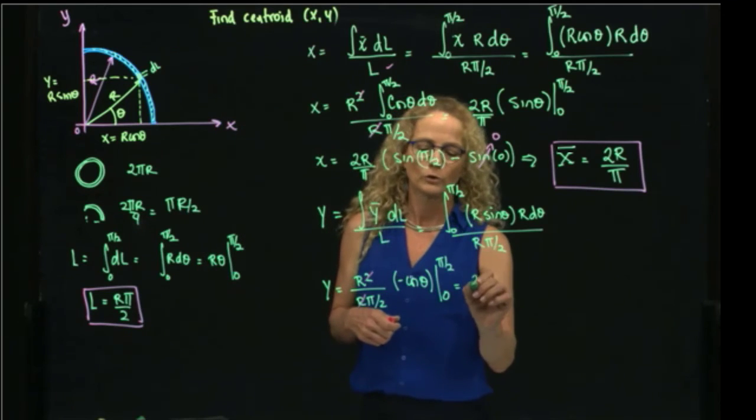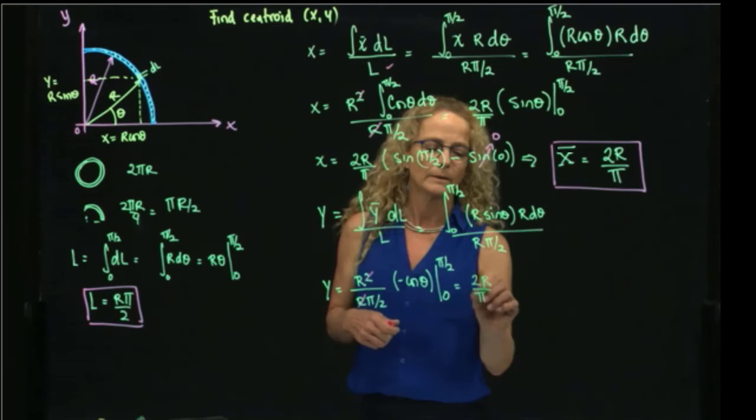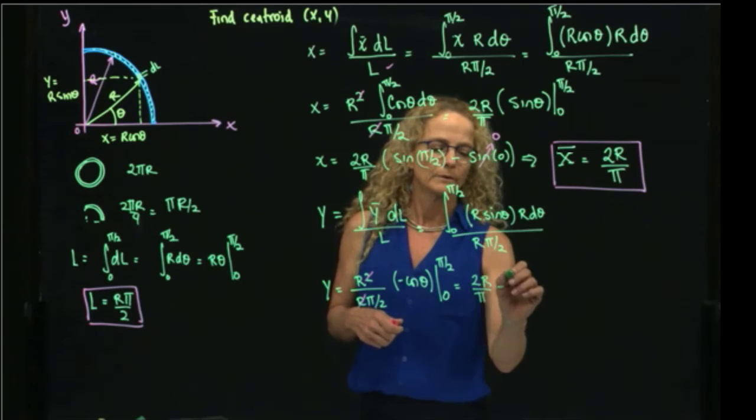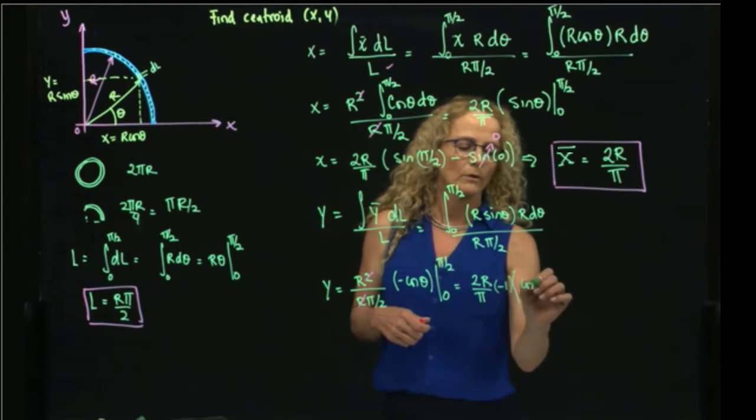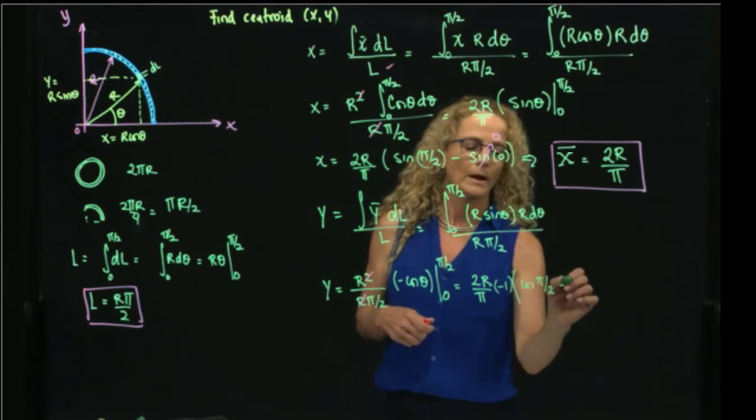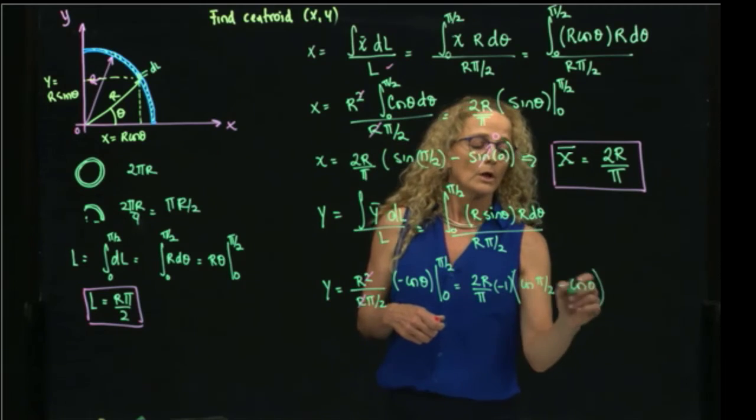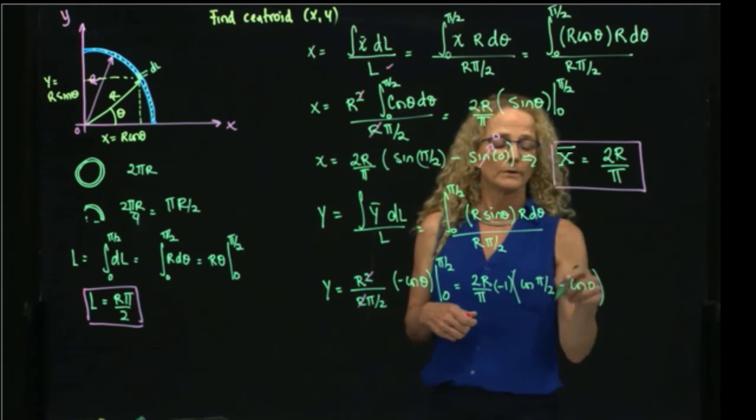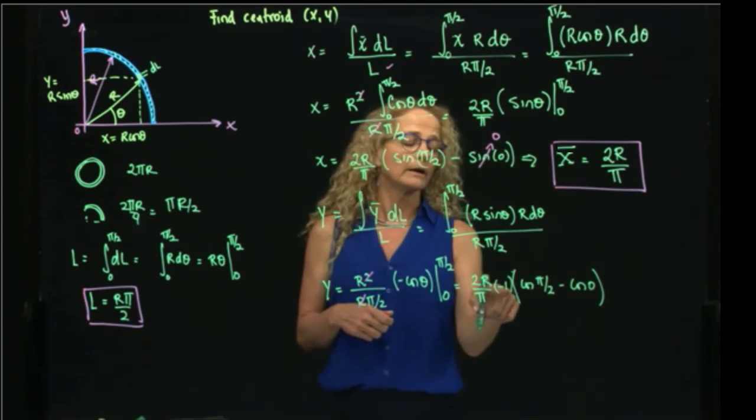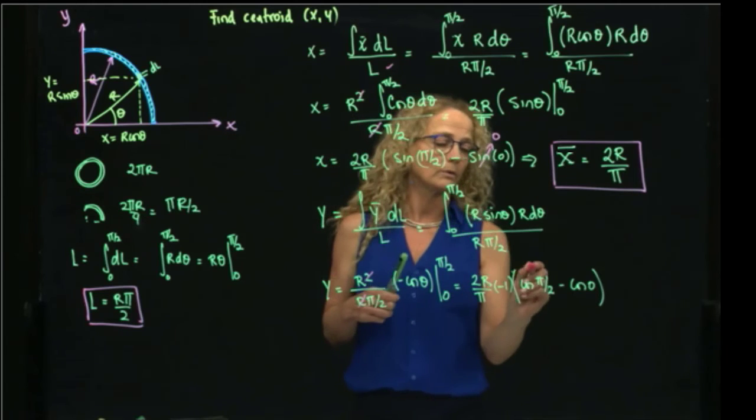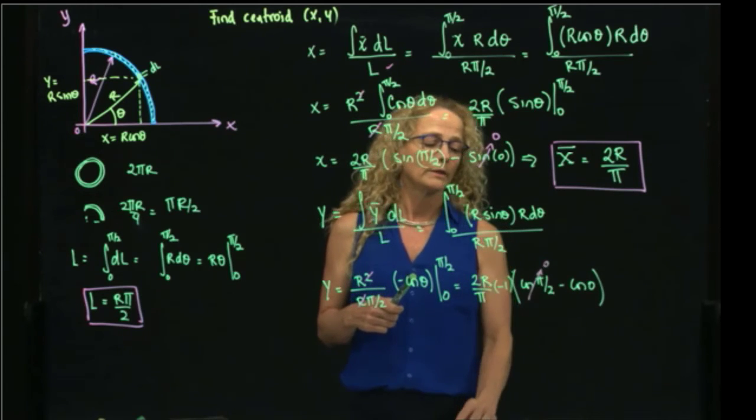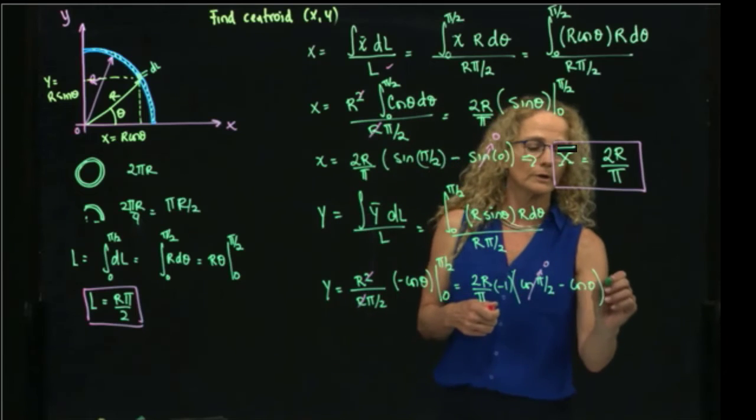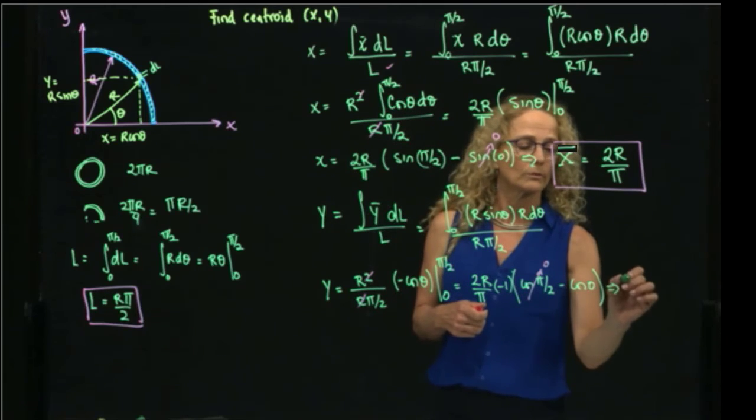and we have 2r over π times negative cosine of π/2 minus cosine of 0. So here we have, we evaluated that, and as we say, this goes to 0, and with this negative, and this is 1, therefore, it gives me actually the same result, right?